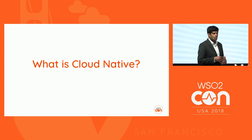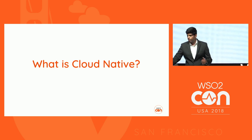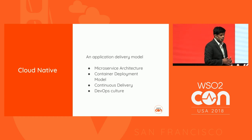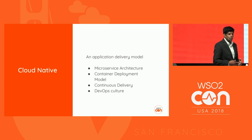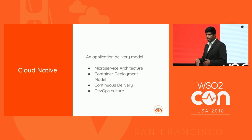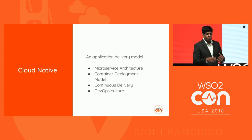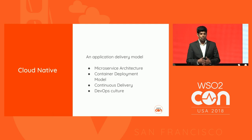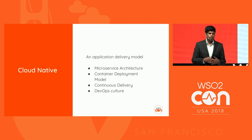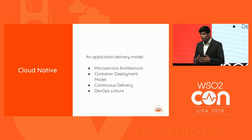Cloud native is one of the buzzwords in the industry. It is just more than running your application on cloud infrastructure. Cloud native is an application delivery model which enables you to prototype, experiment, and develop your service and product as quickly as possible and go to market without any delay. It consists of four aspects: a recommended microservice architecture, a container deployment model, an agile release process, and a DevOps culture within your organization.